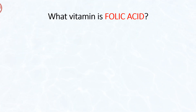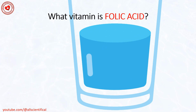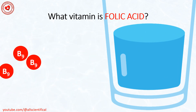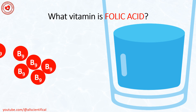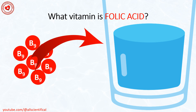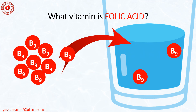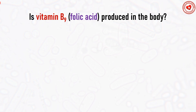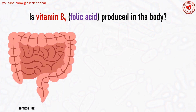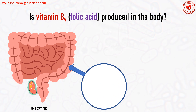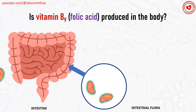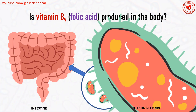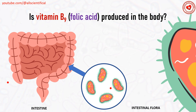What vitamin is folic acid? Vitamin B9, Folic Acid, is a water-soluble vitamin. Is vitamin B9, Folic Acid, produced in the body? Yes, this vitamin is produced in small quantity by intestinal flora in the intestines.